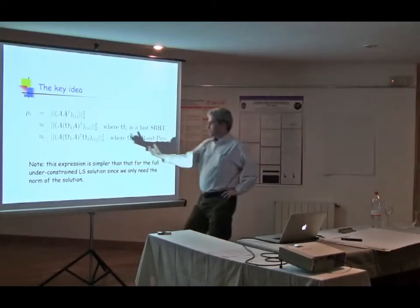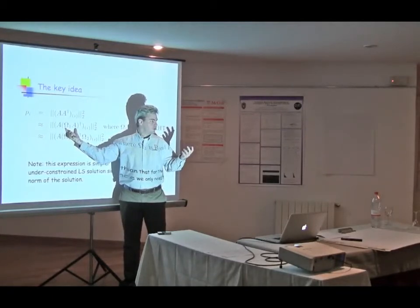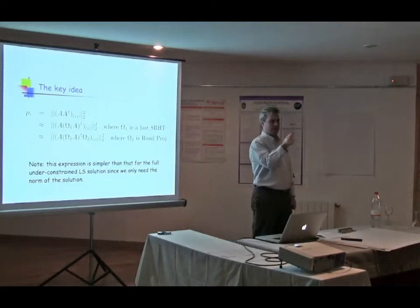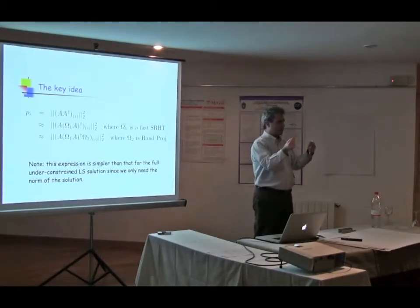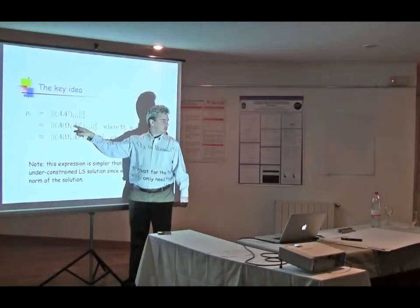And why is that? It's because you can think of this as a QR decomposition. I wrote it as an SVD, but it's really a QR decomposition. If I take the exact matrix A and I do QR on A, if I post-multiply that by R inverse, I get Q.